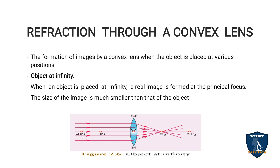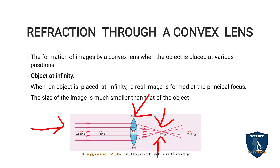Now refraction through the convex lens — how image formation takes place when the object is placed in different positions. First: object at infinity. When you place the object at infinity, a far away place, the light falls on it, travels through the convex lens, and after refraction you get a very small image at the focus point on the other side of the lens.